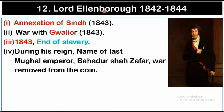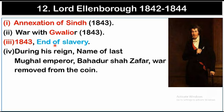The twelfth Governor-General was Lord Ellenborough, whose tenure was from 1842 to 1844. The most important event during his tenure was the annexation of Sindh in 1843. During his tenure, a war with Gwalior was fought in 1843, and also in 1843, slavery was abolished. The name of the last Mughal Emperor, Bahadur Shah Zafar, was removed from the coins during his tenure.